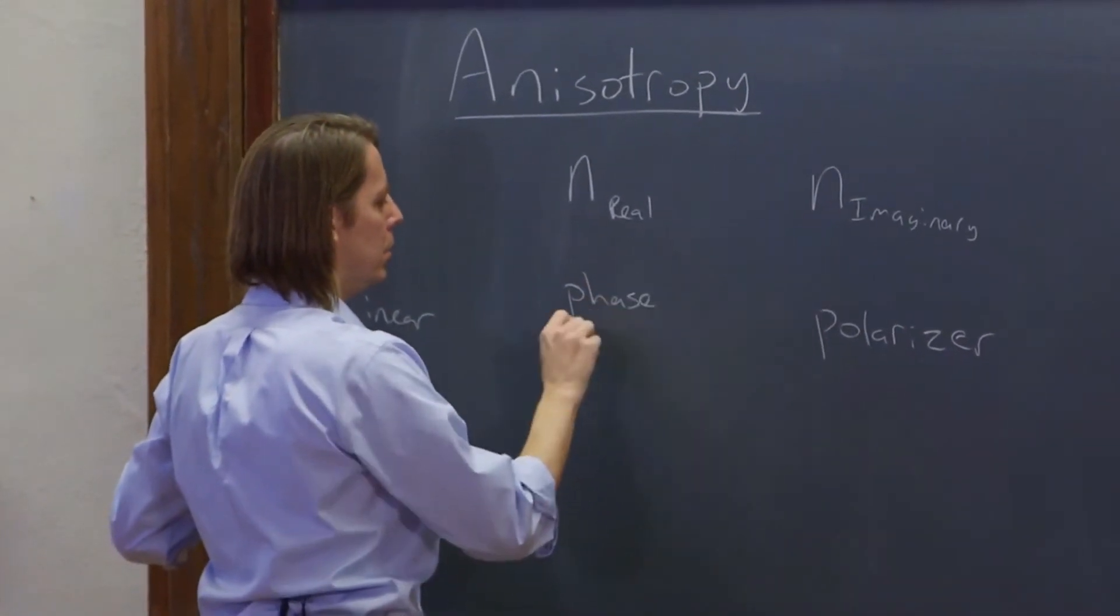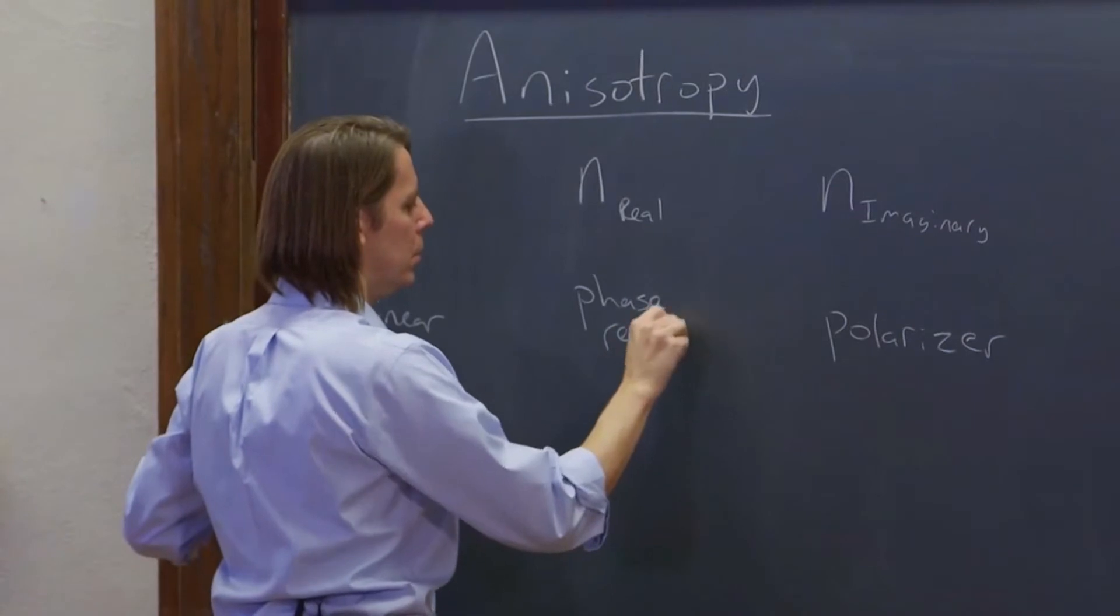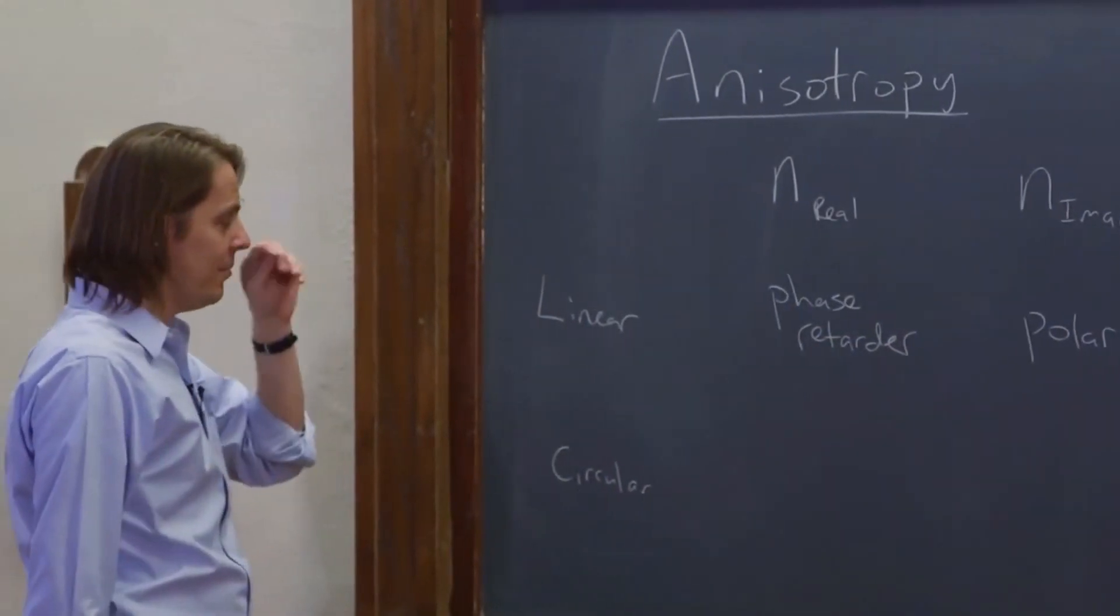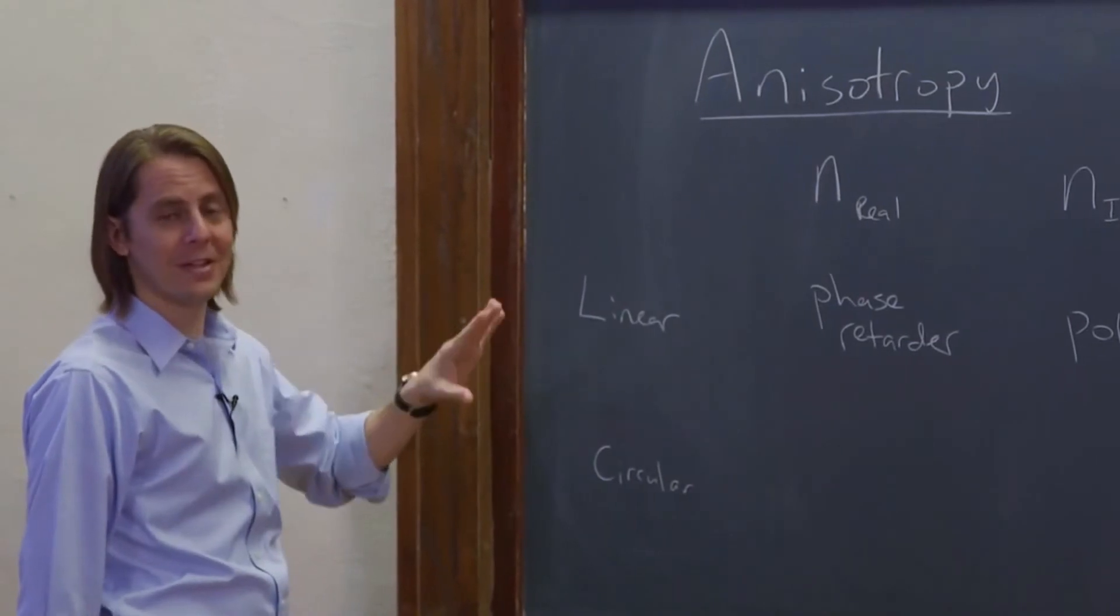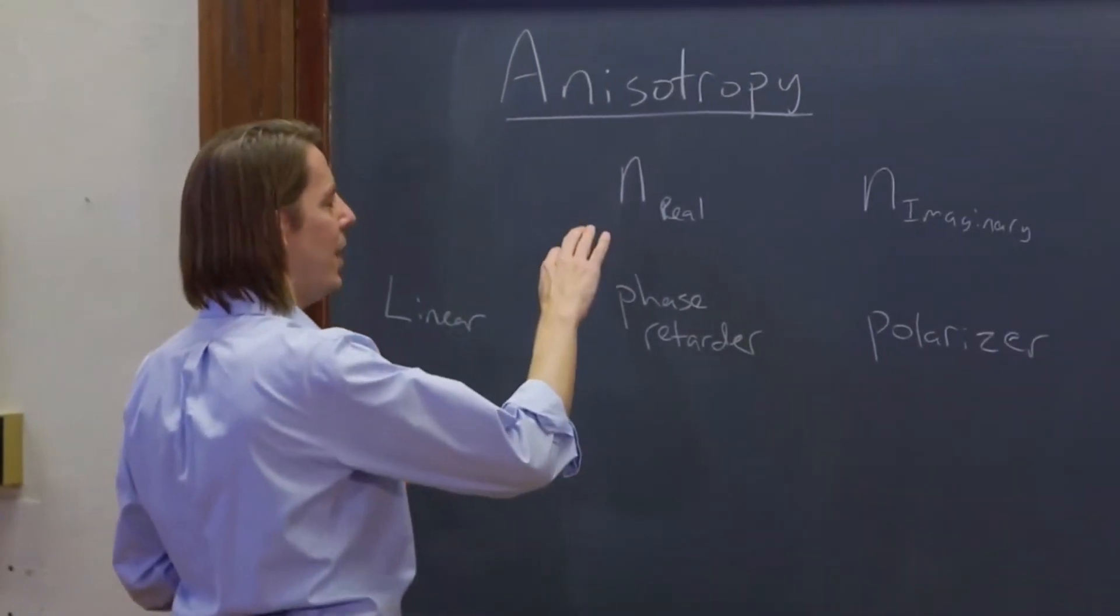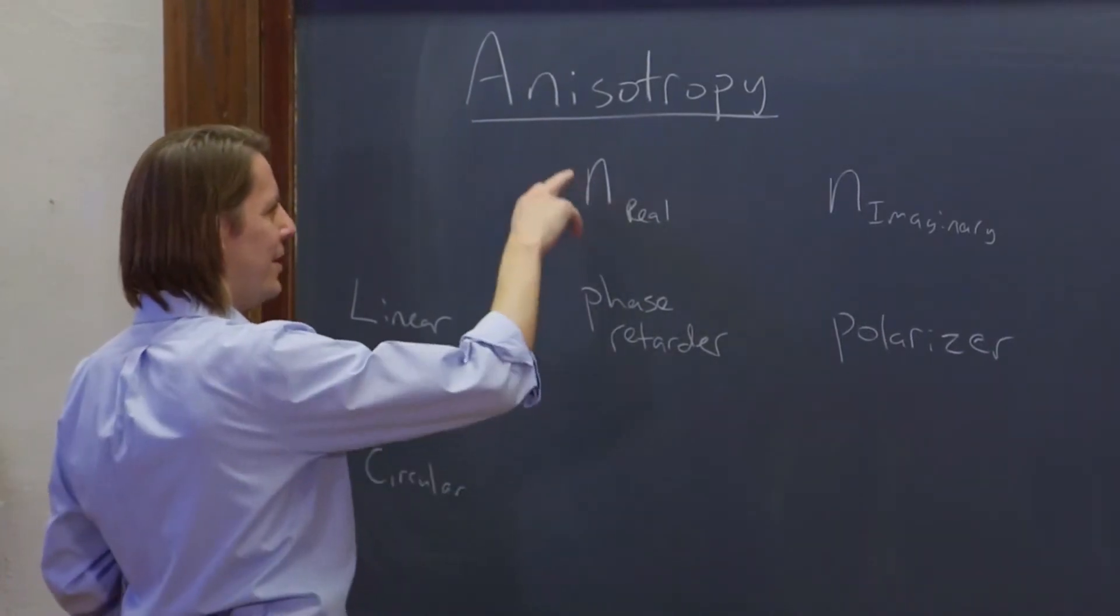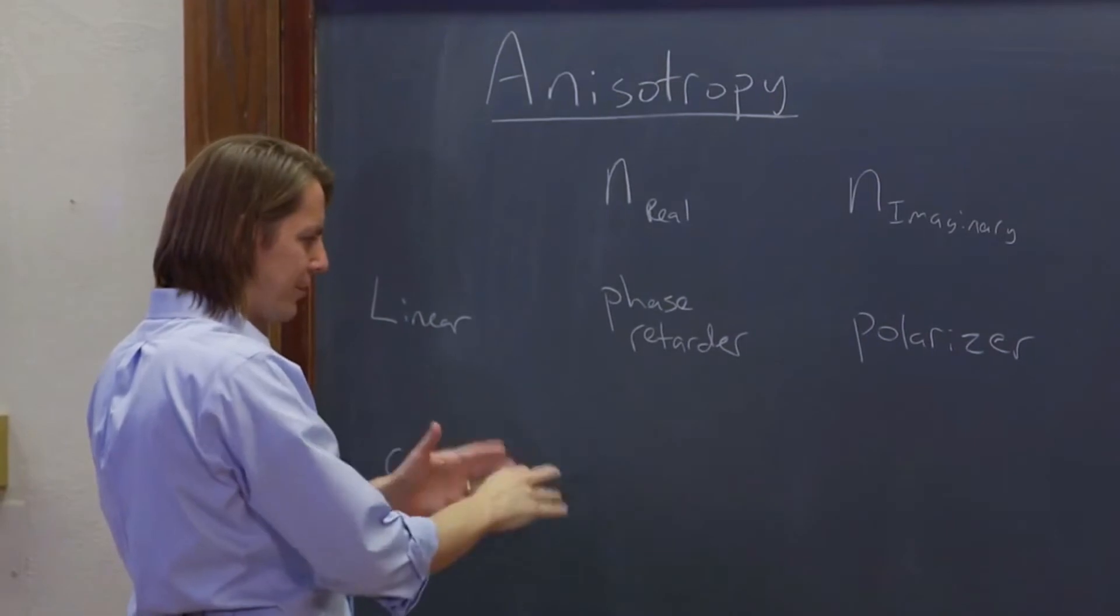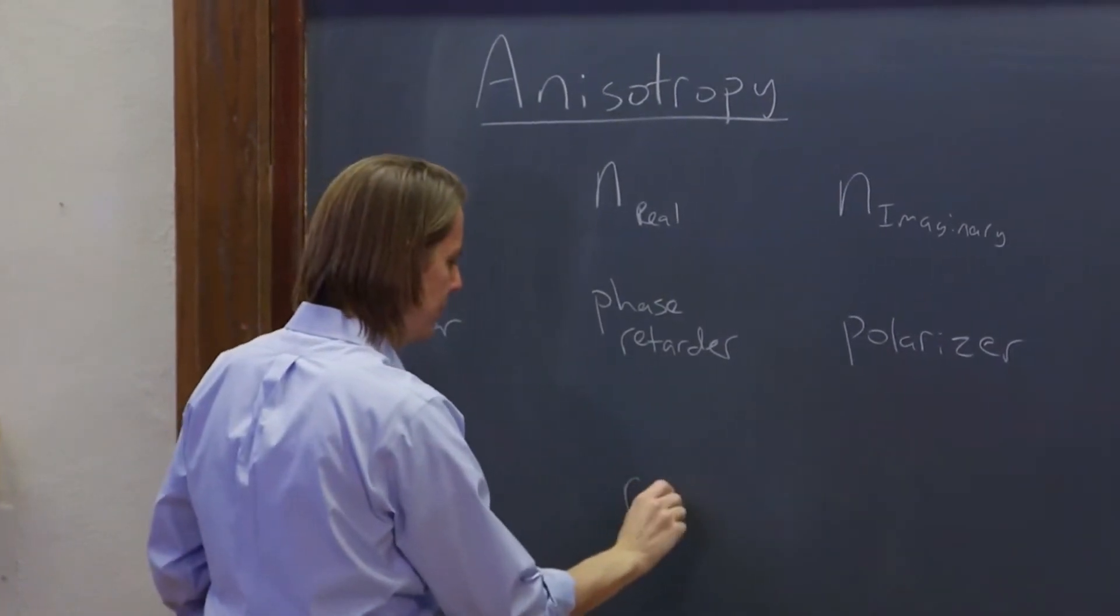And then we realized circular light can have its own index, and it can be anisotropic. So when you have anisotropy for the circular light in the real part, different speeds, that was the rotator that we just talked about.